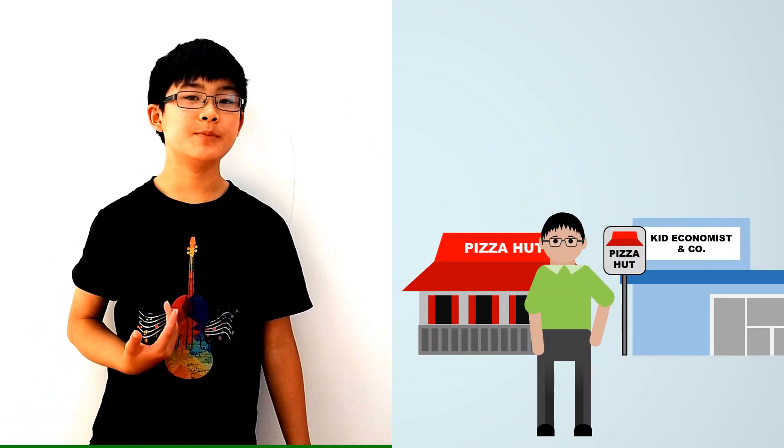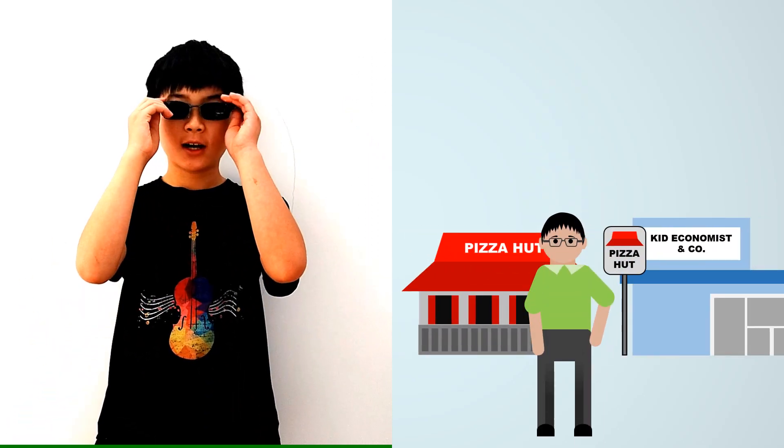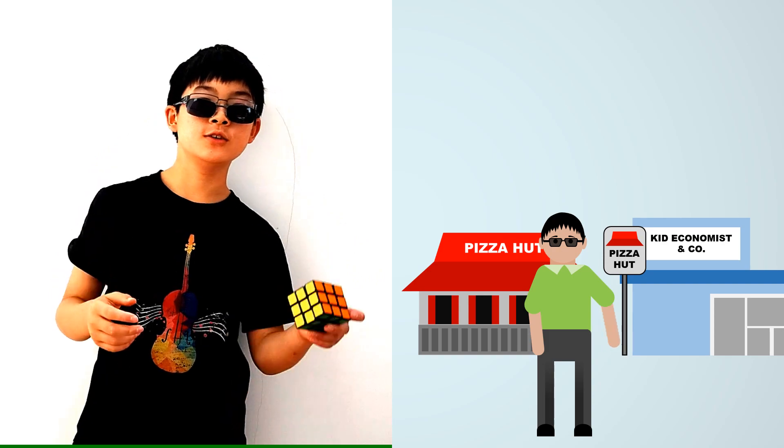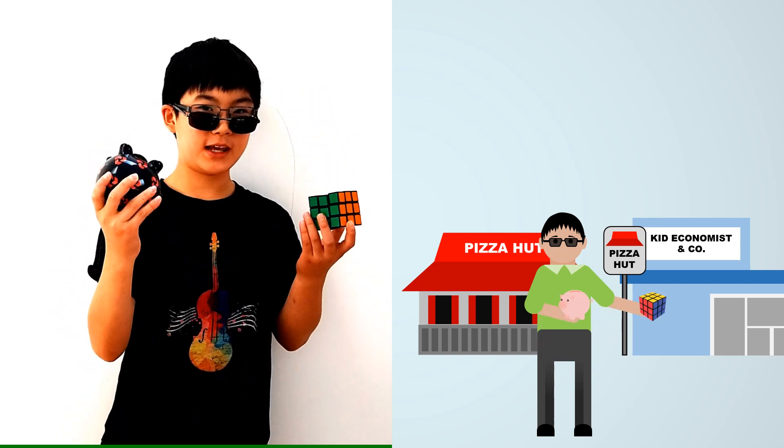An example might help explain this, as well as covering the rest of the content, which is Allocation of Resources and Factor and Product Markets. So when I go out, I'm usually the buyer. I buy things like cool sunglasses, Rubik's cubes, piggy banks to store my money, etc.